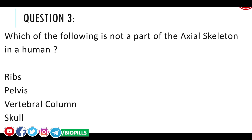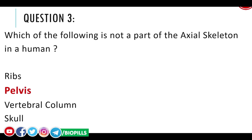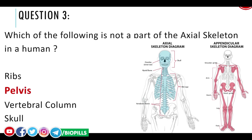Question number three: which of the following is NOT part of the axial skeleton in humans? Ribs, pelvis, vertebral column, or skull? The answer is the pelvis. The axial skeleton is made up of the skull, vertebral column, and rib cage.